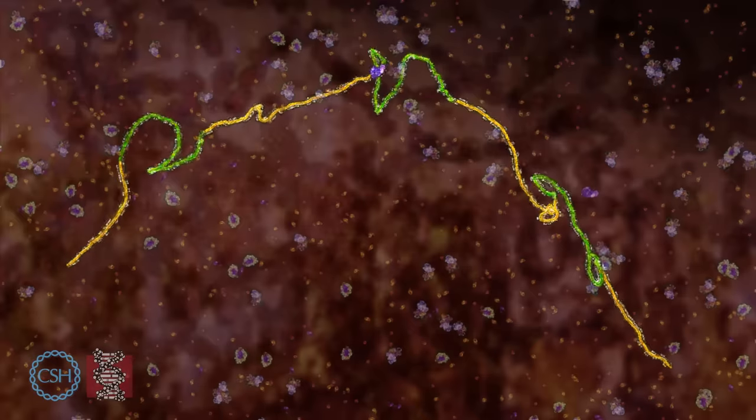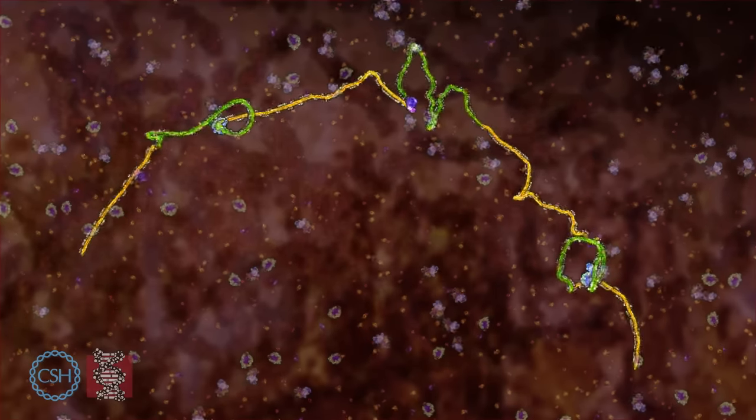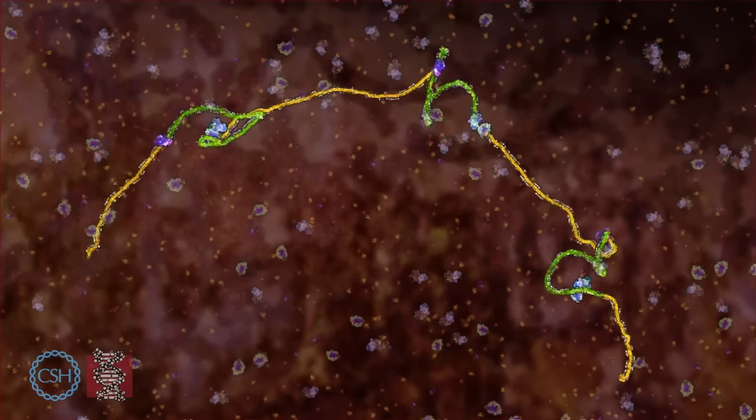The edited RNA and intron are released and the splicesome disassembles. This process is repeated for every intron in the RNA.